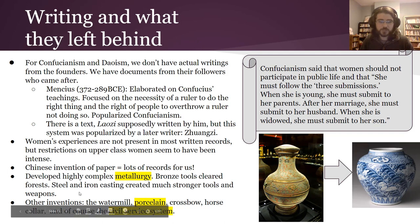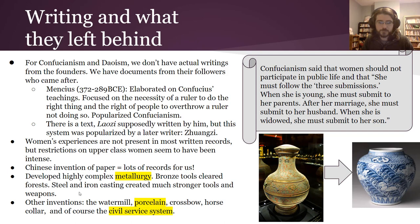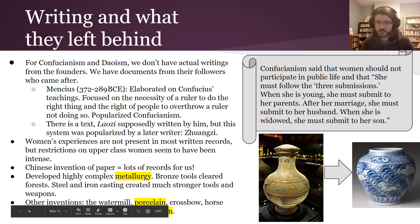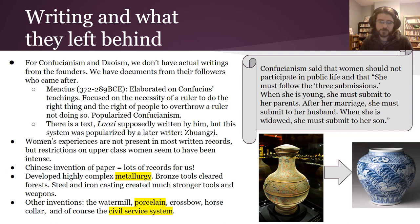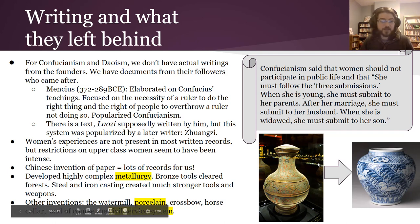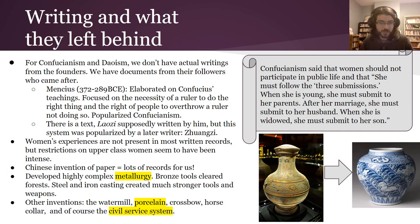They also developed really complex metallurgy — working with metals — and used it to advance their society in specific ways. Other inventions include the water mill and porcelain, a kind of pottery you can see here — this is Han Dynasty pottery, and though a later example is shown, it developed from this period. Also the horse collar, which is a way for horses not to choke to death when pulling plows. And of course, the civil service system itself is an invention — think about that.